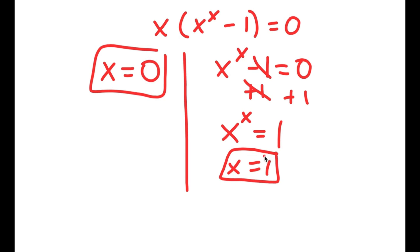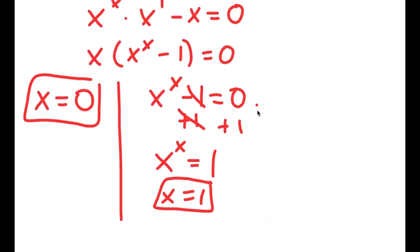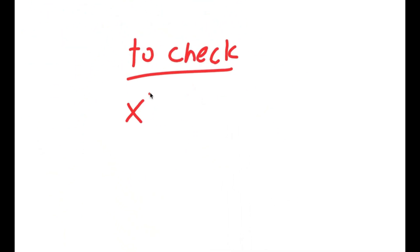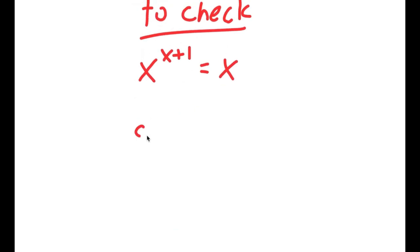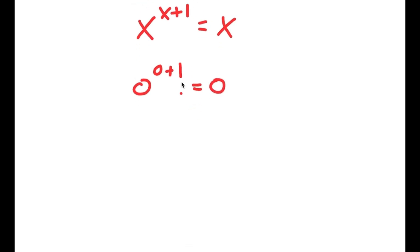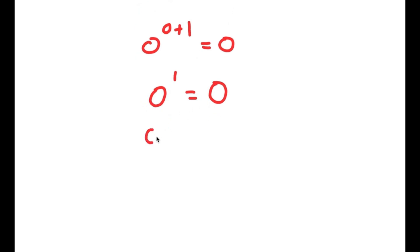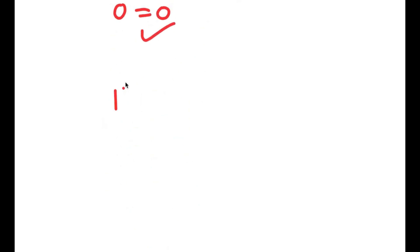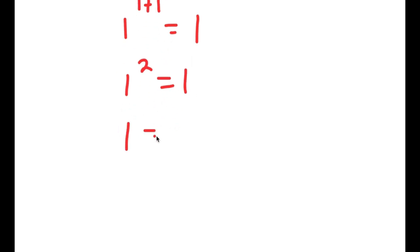There's no other number that, when you take the power of itself, is going to equal 1, meaning x equals 1 is the only solution to this equation. To check: the original equation was x to the power of x plus 1 is equal to x. Plugging in 0: 0 to the power of 0 plus 1 is equal to 0; 0 plus 1 is 1, so 0 to the power of 1 equals 0, and 0 to the power of any number is 0 — so 0 equals 0. For x equals 1: 1 to the power of 1 plus 1 equals 1; 1 plus 1 is 2, so 1 to the power of 2 equals 1, and 1 to any power is 1 — so 1 equals 1.